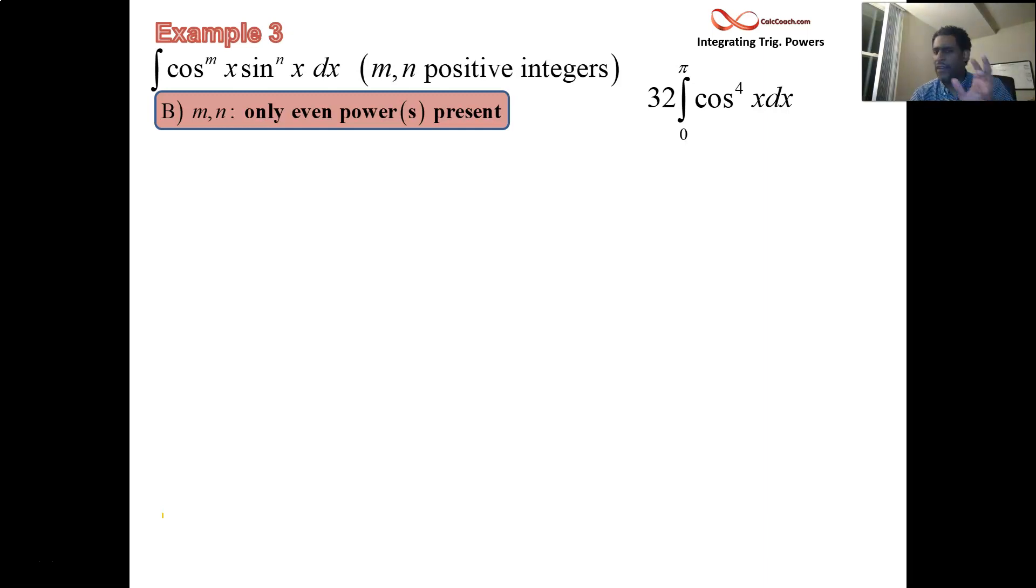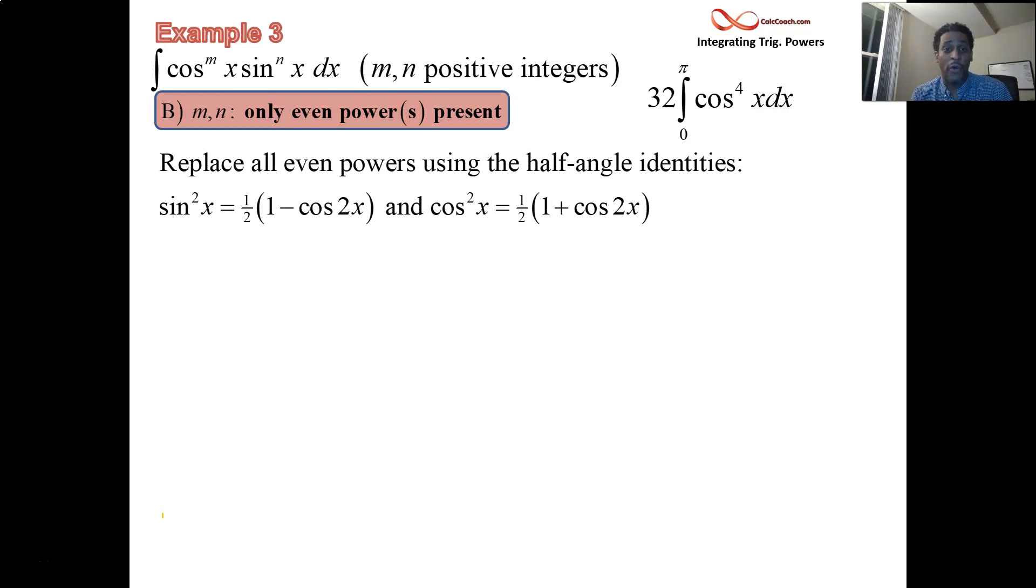No need to factor out, convert, use sub - only use that technique when there's an odd power present. So what do you do when there's no odd power present? What do you do if the only powers that show up are even powers? Actually, you just go to an identity. There's two identities that we use called the half-angle identities.